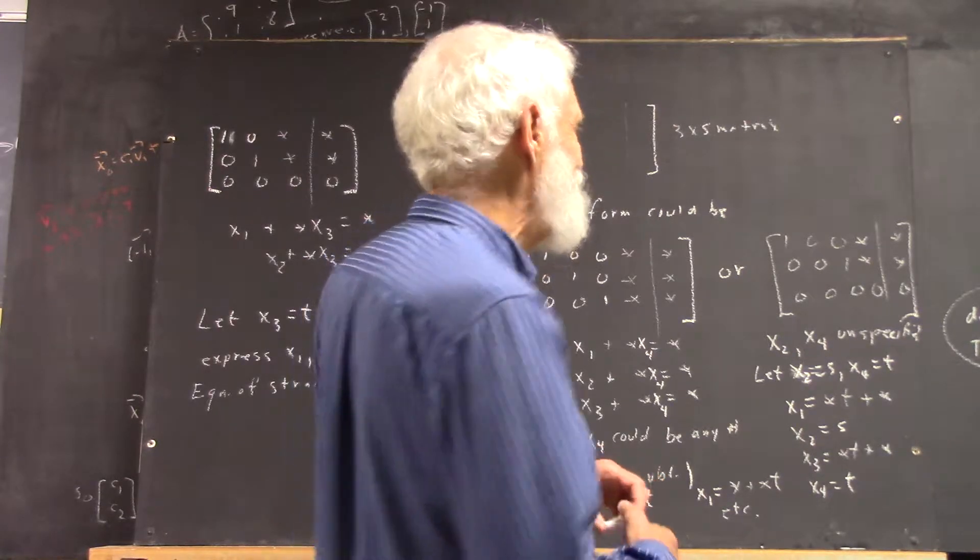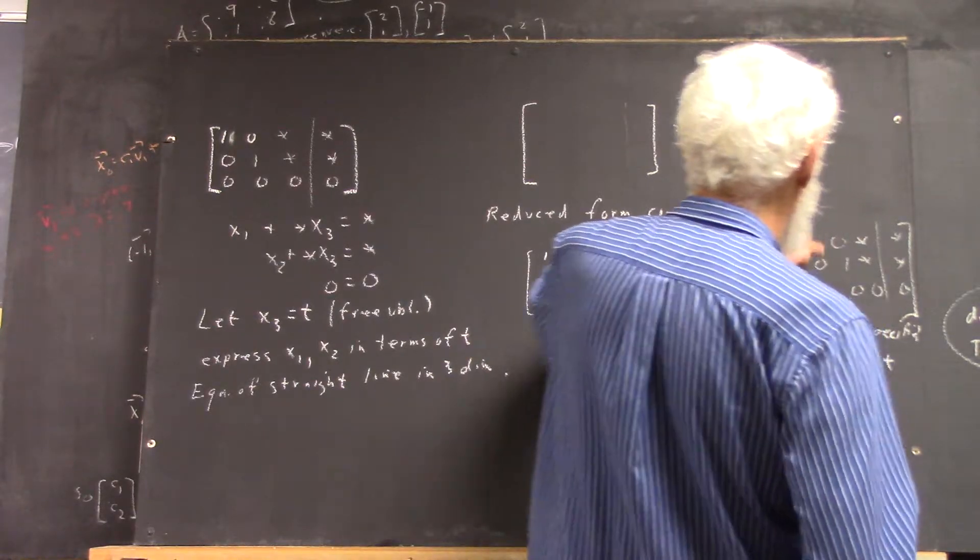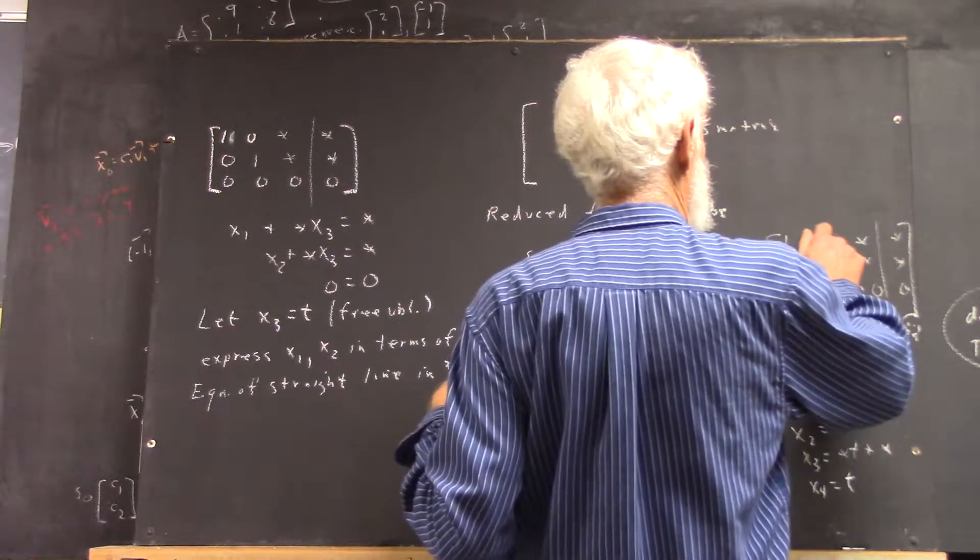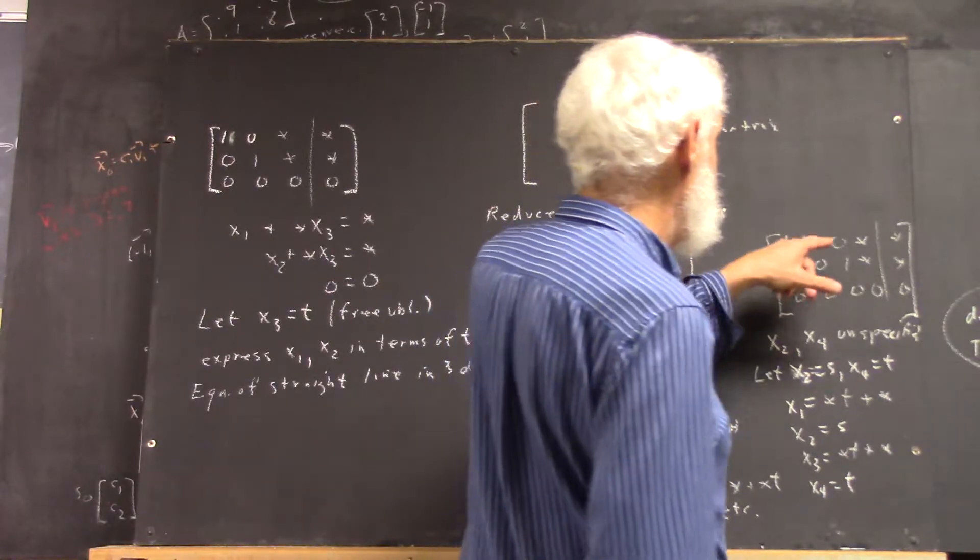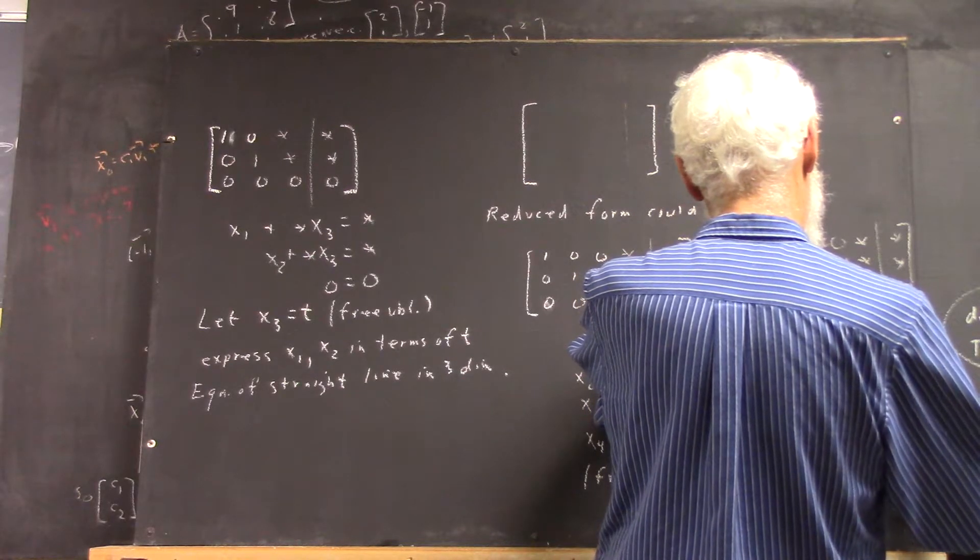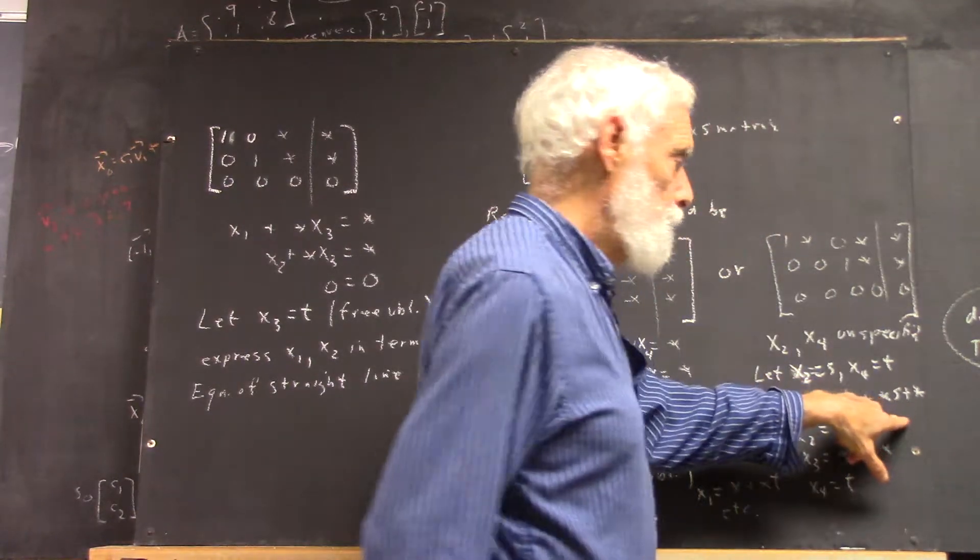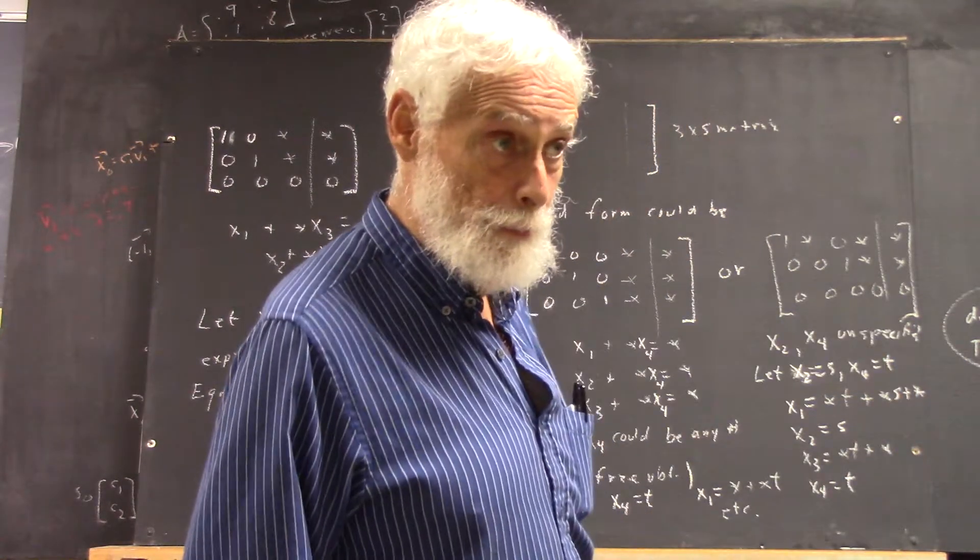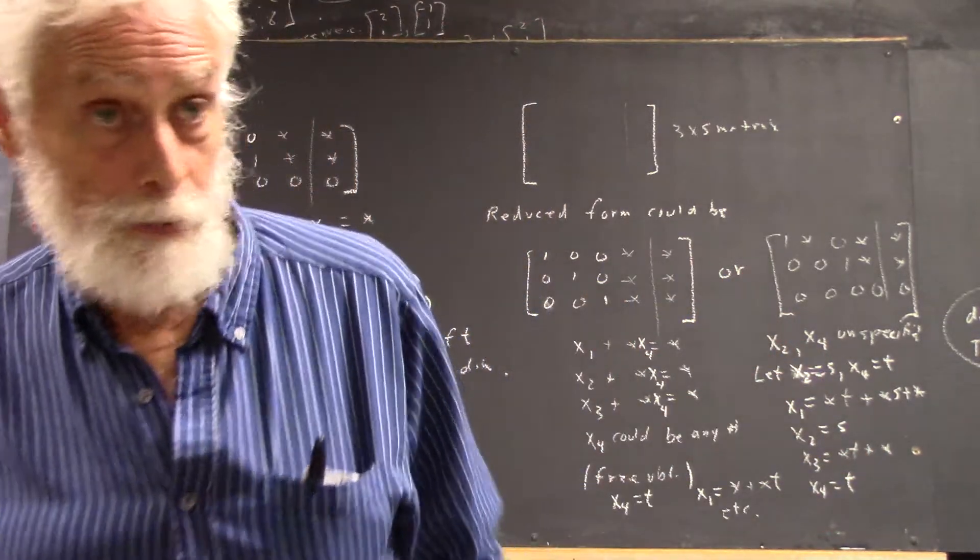And, you know, actually, you wouldn't end up with a zero here if you ended up with a zero here. You have something like this. So, the x1 would be something times t, but also something times s. So, multiple of t, multiple of s, and a variable, okay? Just so you know that, so you can look out for it and make sure you understand. Okay?